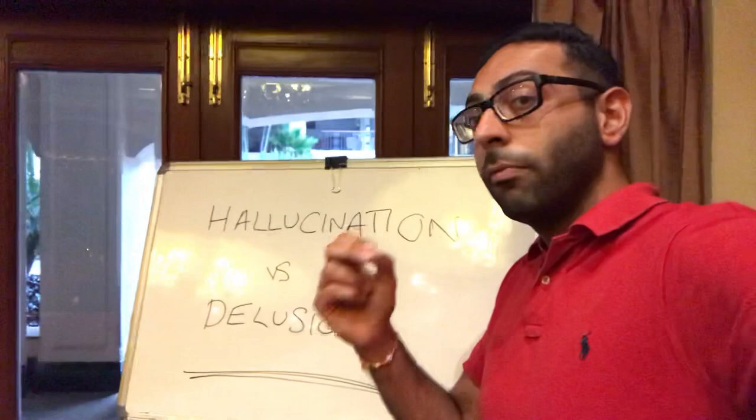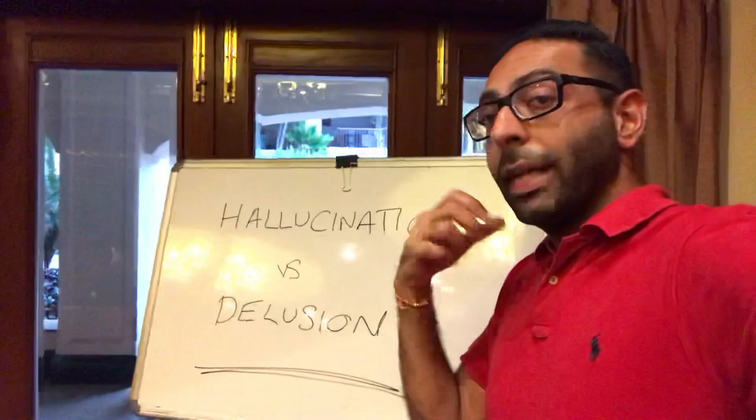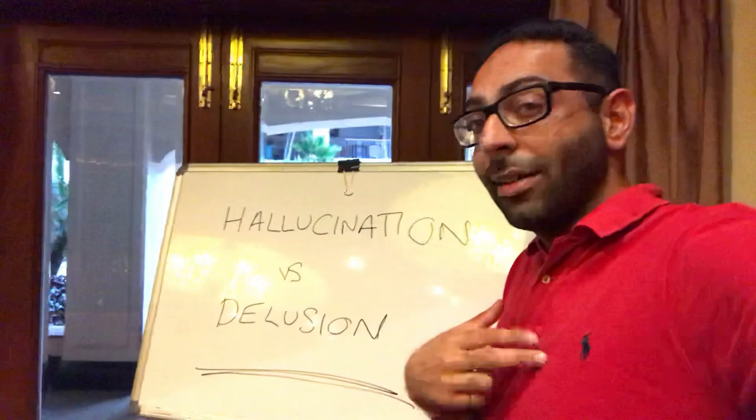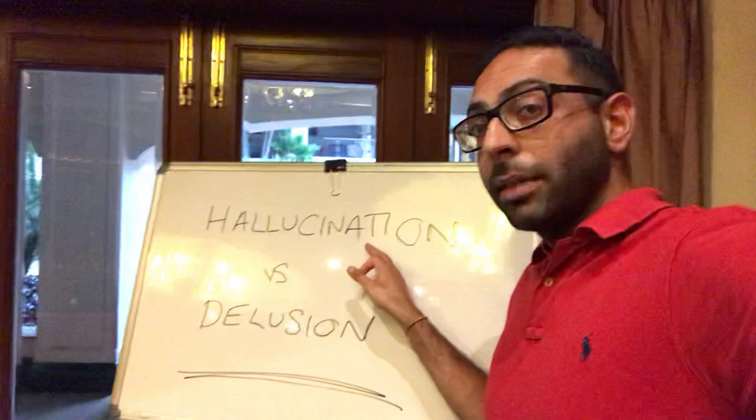You can have visual hallucinations — you see things that are not really there. Auditory hallucinations — you're hearing things that are not really there. Olfactory hallucinations — you're smelling things that are not really there. Or tactile hallucinations — you're feeling things that are not really there. So that's a hallucination: an abnormal perception of something that's not really there.